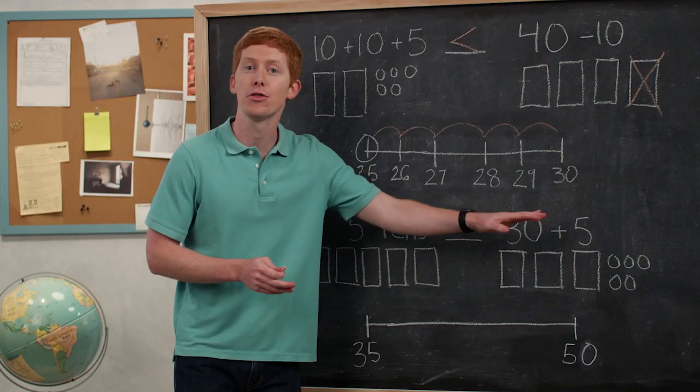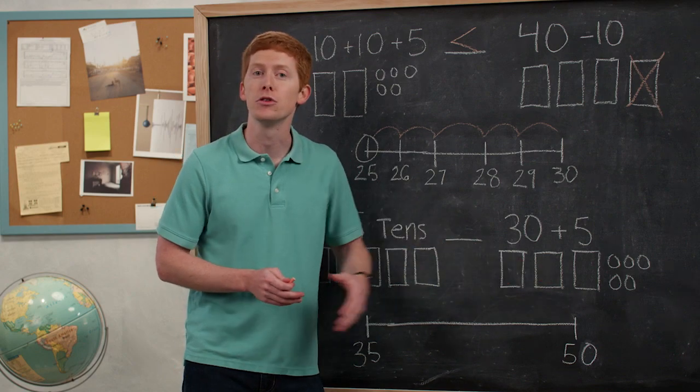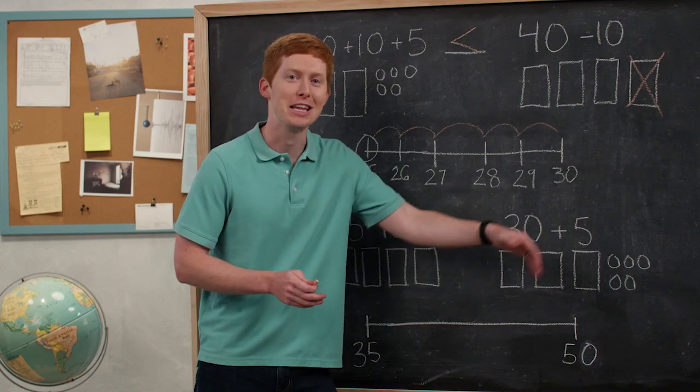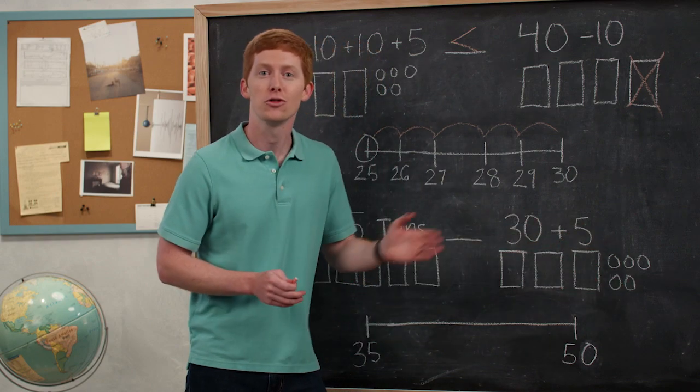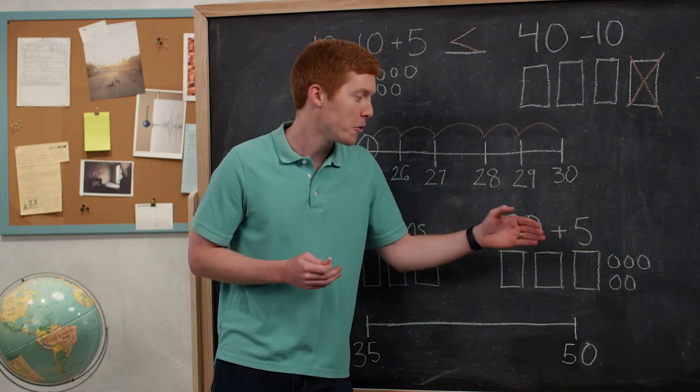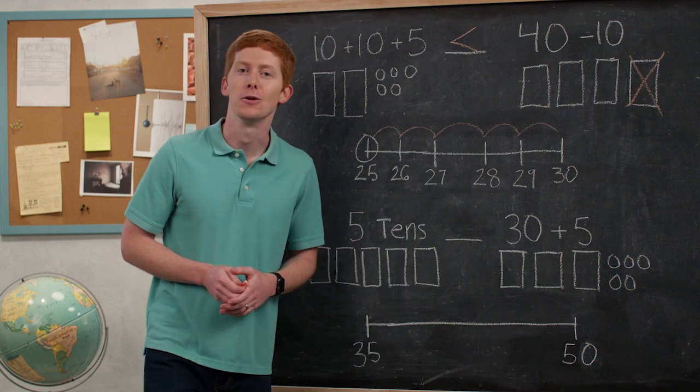And how does that compare with the other side? 30. I know I need three groups of 10, right? 10, 20, and 30. But I also have five ones. I got to add those in too. So 31, 32, 33, 34, and 35.